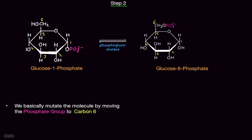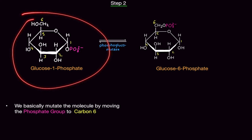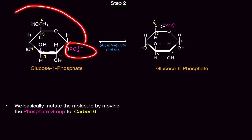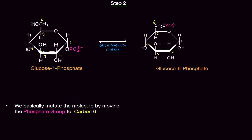Step two: we use phosphoglucomutase to convert glucose-1-phosphate to glucose-6-phosphate. All we're doing is mutating the molecule — as the enzyme name suggests — moving the phosphate molecule from carbon one to carbon number six. That's it; that's all we did.